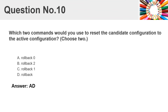Question number ten. Which two commands would you use to reset the candidate configuration to the active configuration? Choose two. A. Rollback 0. B. Rollback 2. C. Rollback 1. D. Rollback. Answer: A, D.